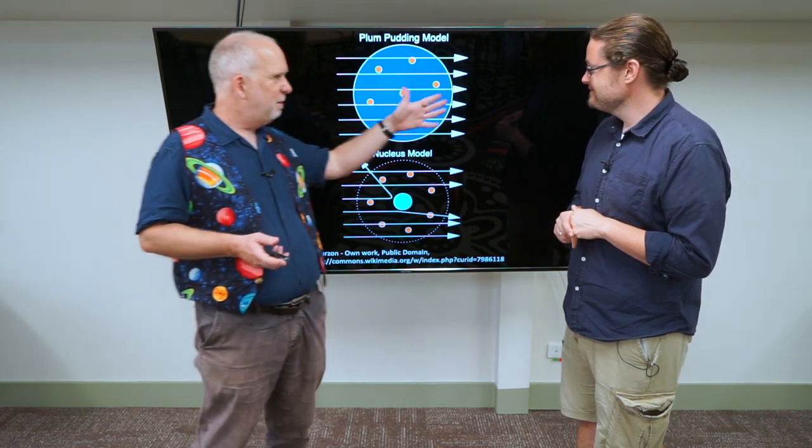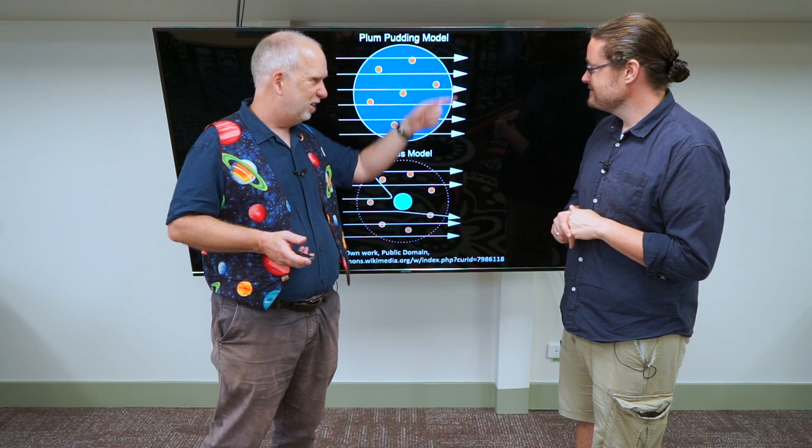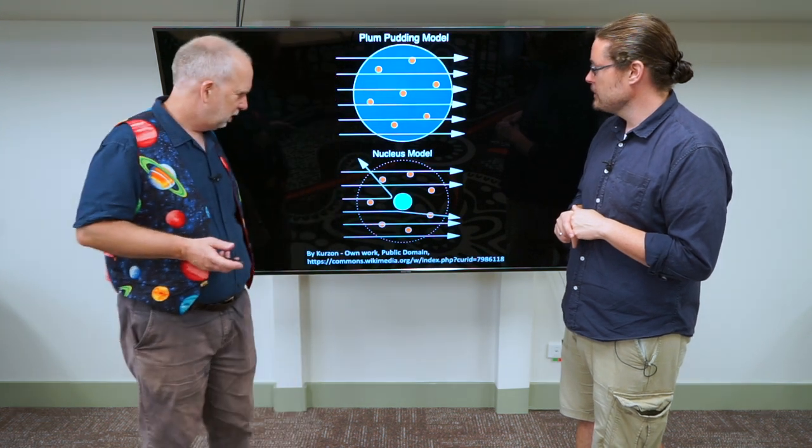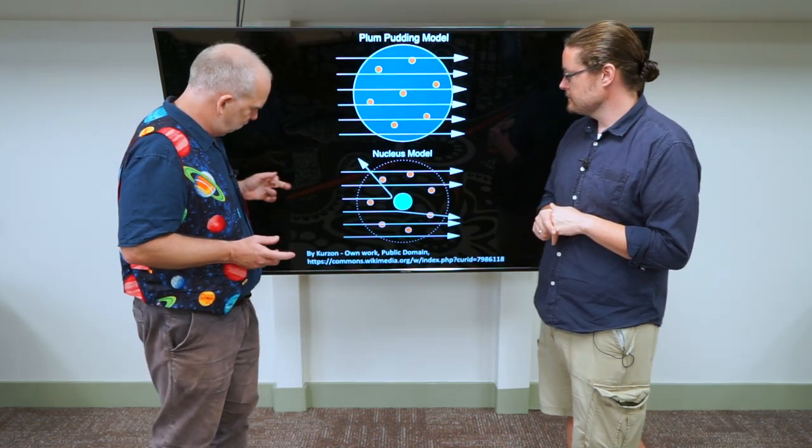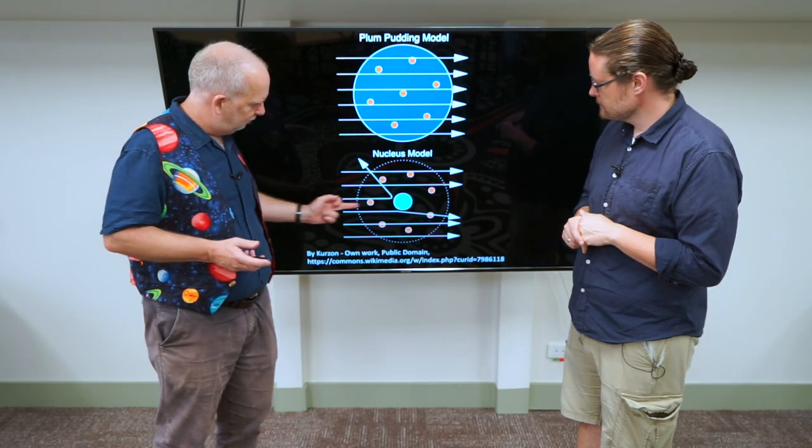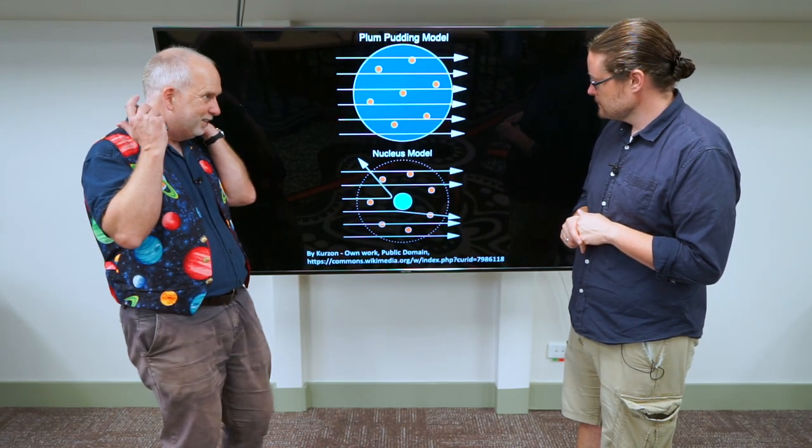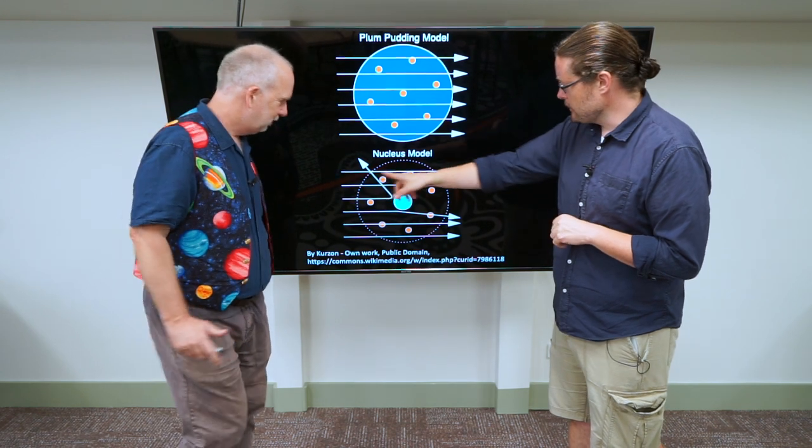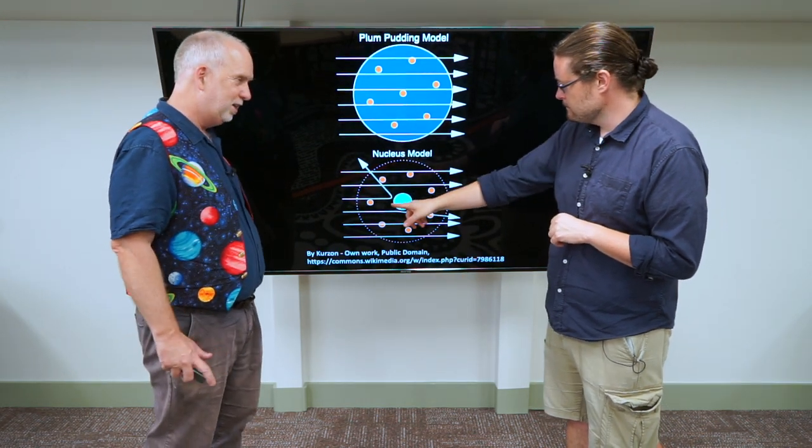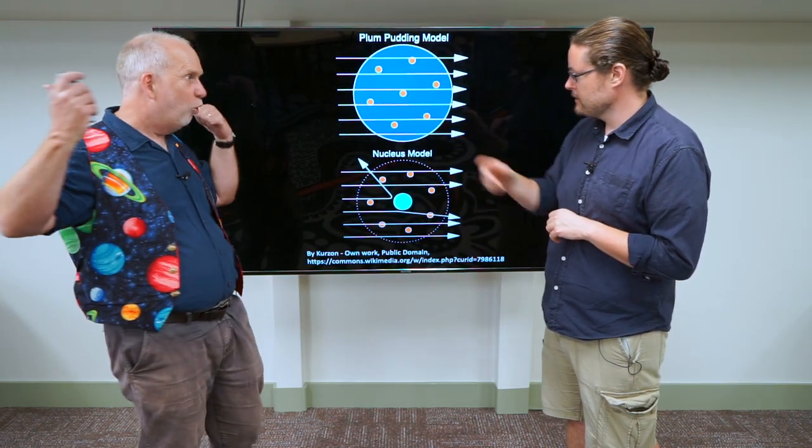And so he was expecting them to be fired through and maybe very slightly deflected by a close encounter with an electron or something like that. But much to his amazement, what he discovered was when he fired these very heavy particles in, some of them bounced straight back out again. So some made them through, but some, a tiny fraction just sort of bounced back in enormous angles.